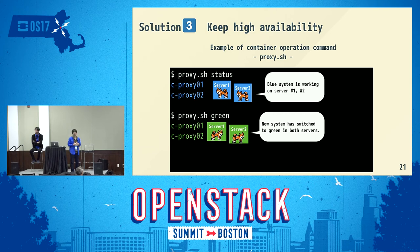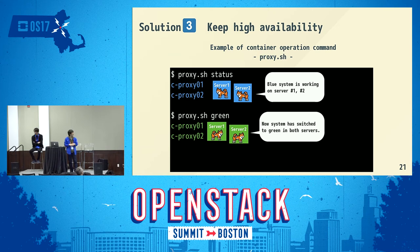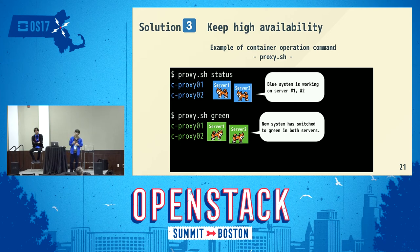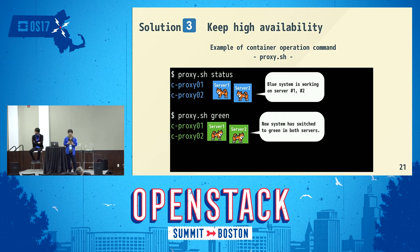This page shows proxy.sh. I am typing proxy.sh status at the command line, and this command returns a blue highlighted string as the result, meaning the current available system is blue on both Docker servers. This command returns really intuitive results because we can recognize which system is active just by seeing the color. Next, I type proxy.sh green, meaning I want to switch the system from blue to green. This command returns a green highlighted string, meaning the blue-to-green switch has successfully finished and the active system is now green. This command lets us operate both servers at once and returns intuitive results.